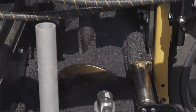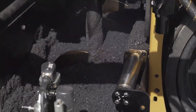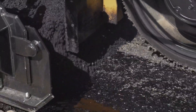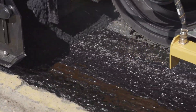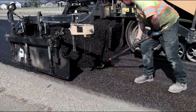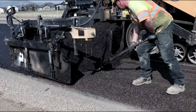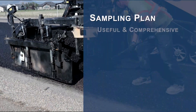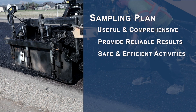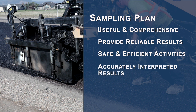Intervals such as the quantity of material produced, the number of loads, or the number of hours of production can be used to establish the number and frequency of sampling and testing. To support statistical approaches, a sampling plan should be useful and comprehensive, provide reliable results, include activities that can be readily performed safely and efficiently, and provide results that are accurately interpreted and used.